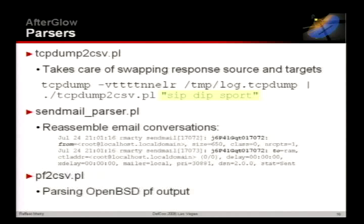The sendmail parser is interesting because sendmail was not designed with logging in mind. For every email they generate two log entries — one saying the email came from someone, and another saying it went to these people. You connect them via the message ID. I wrote a Perl script that remembers all those message IDs and whenever it finds the combination of to and from, it outputs one entry showing them in one line so you can visualize connections. The third parser is packet filter to CSV, which I'll use in a bit.